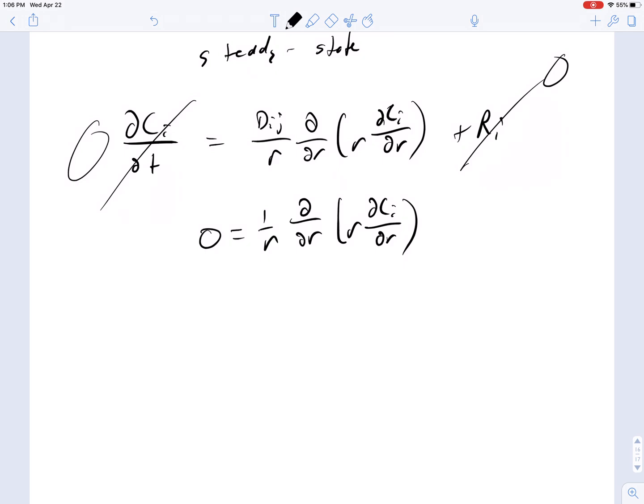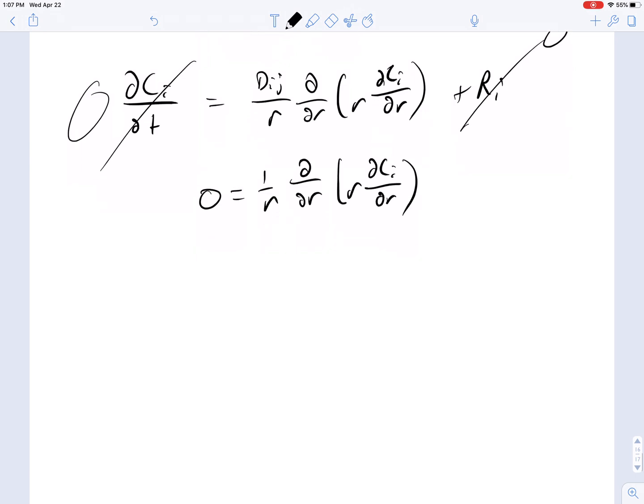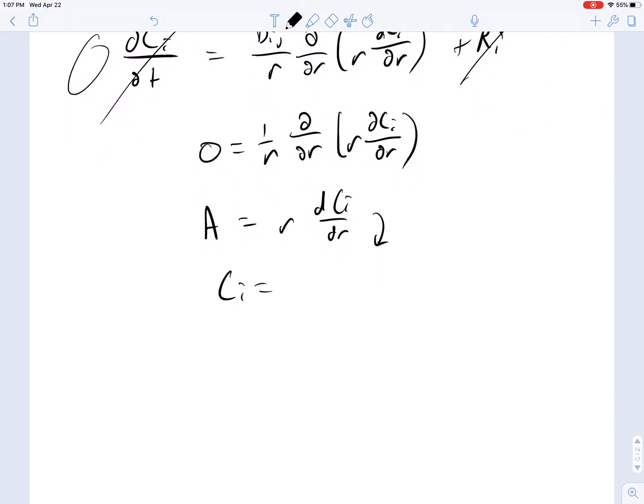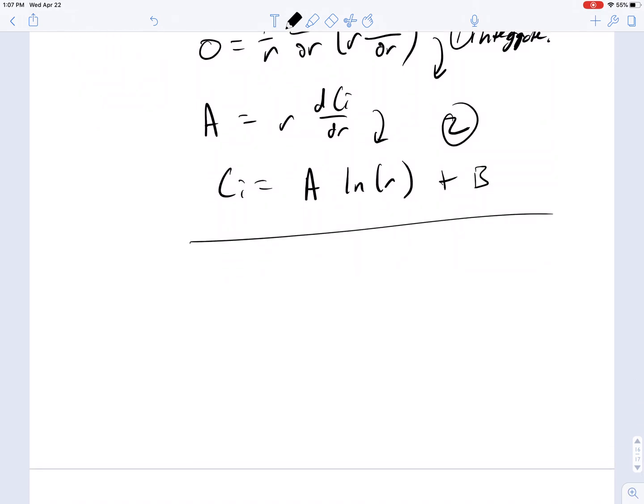This you can totally integrate. You can just do separation of variables. So the first integration is just a constant. So A equals R times dC_I/dR. You can integrate it again, and you get the concentration. This is integrate 1, this is integrate 2. And then you end up with the solution C_I equals A times logarithm of R plus B, where A and B are constants. How do we figure out what the constants are? Well, for this, we're just going to use our boundary conditions.